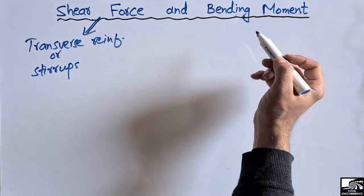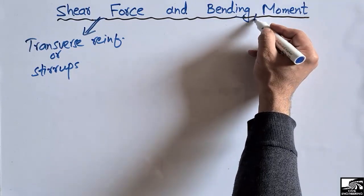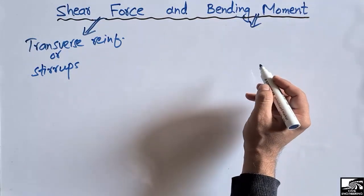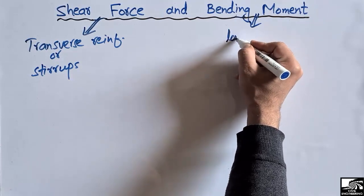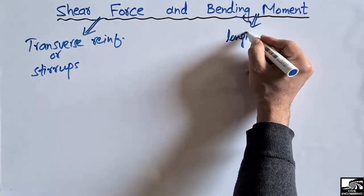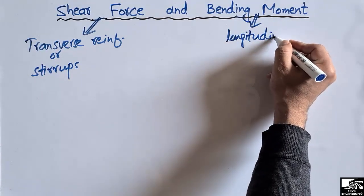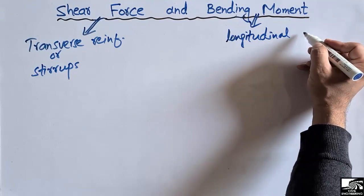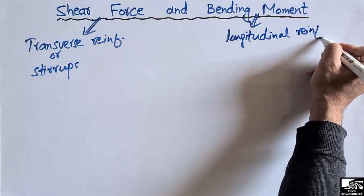The bending moment diagram is drawn in order to get information about the longitudinal reinforcement — that is, how much longitudinal reinforcement should be provided in a beam in order to take the upcoming load on the beam.